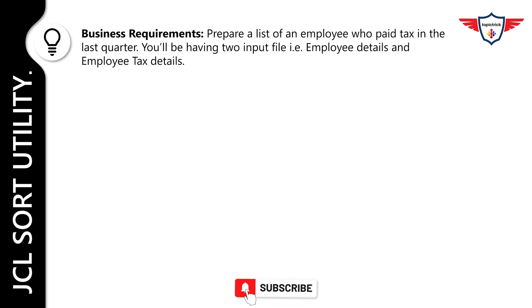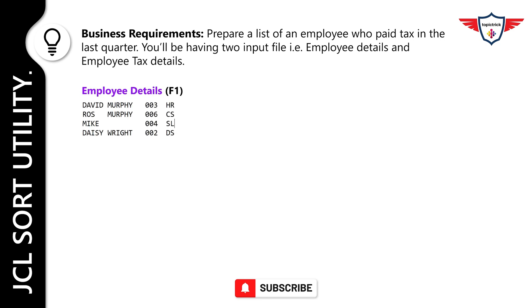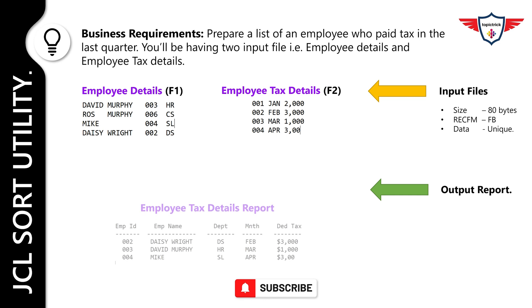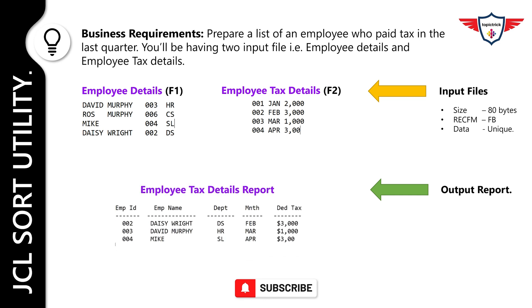As per business need, you are required to prepare a report. This report will include the list of employees who had paid tax in the last quarter. You have two input files: the employee account file F1, and the employee tax detail file F2. The length and record format of both files is the same, and each file has unique records. The output report should be in the following format, displaying data from corresponding input files.